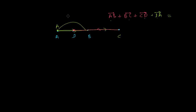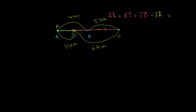Algebraically: AB plus BC plus CD plus DA equals 4 plus 5 plus 6 plus 3. That gives us 18 kilometers total. So if I add these algebraically, it looks like I covered 18 kilometers of distance — but not displacement.